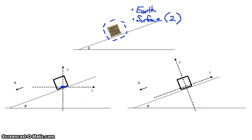This is a comparison between using an upright axis where y is vertical and x is horizontal, versus a tilted axis where x is tilted along the plane of the incline.